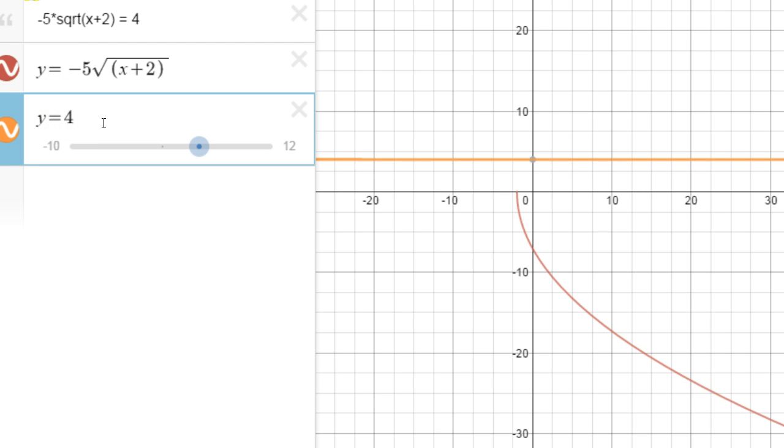Now, if I made this equal to negative 5, the answer would be right here, but it's not. It's at 4. So what I'm doing is I'm multiplying a square root, which always has to be positive, by negative, and then get a positive answer.